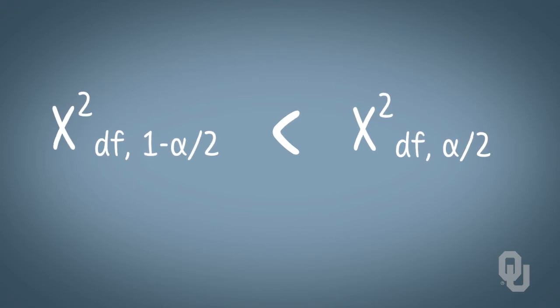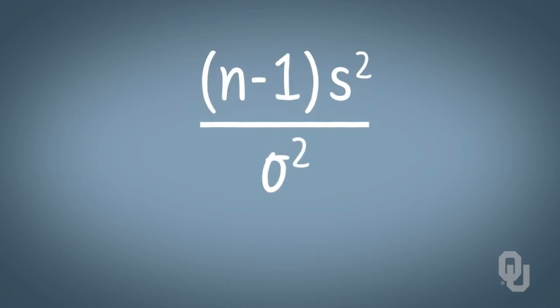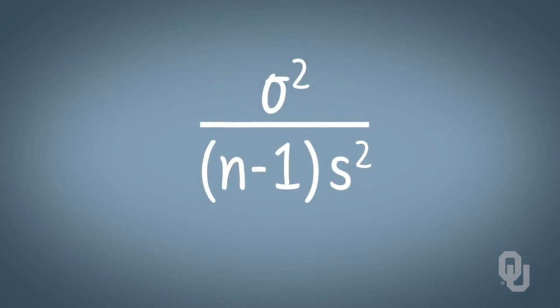But we don't want a confidence interval for n-minus-one times s-squared divided by sigma-squared, this ratio that we've been talking about. We want a confidence interval for sigma-squared. To isolate sigma-squared, we first have to invert the ratio, and thus invert and switch the bounds from the rules of arithmetic.